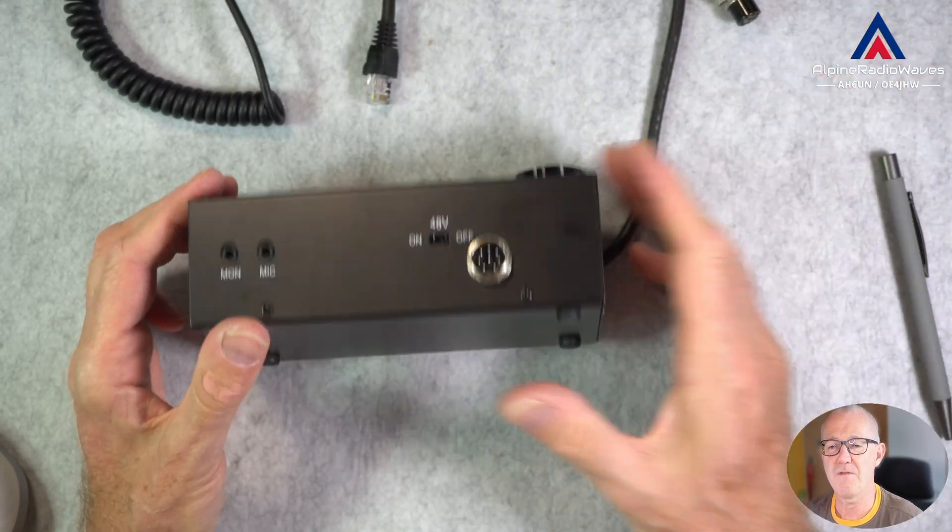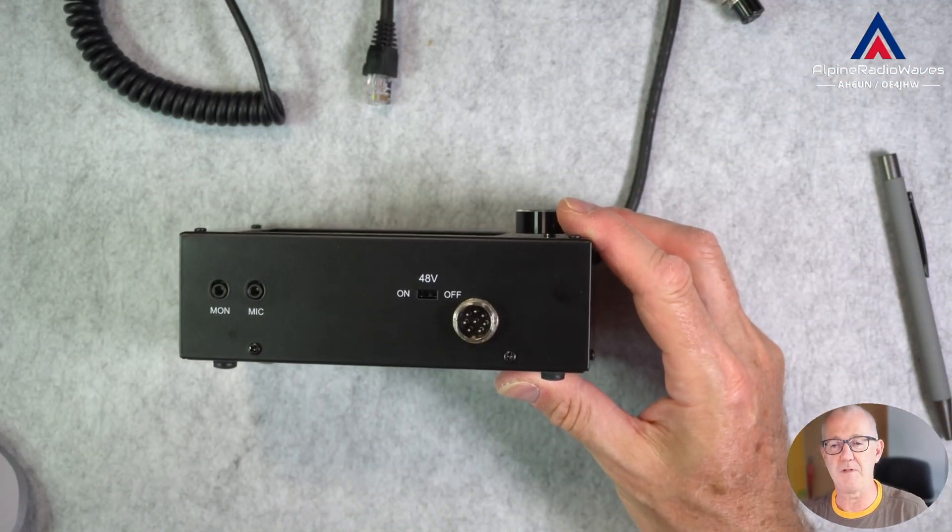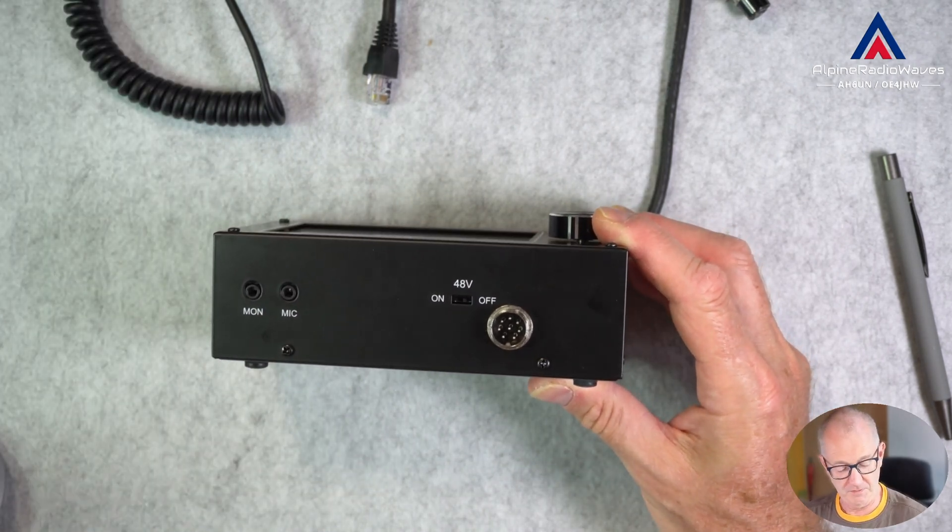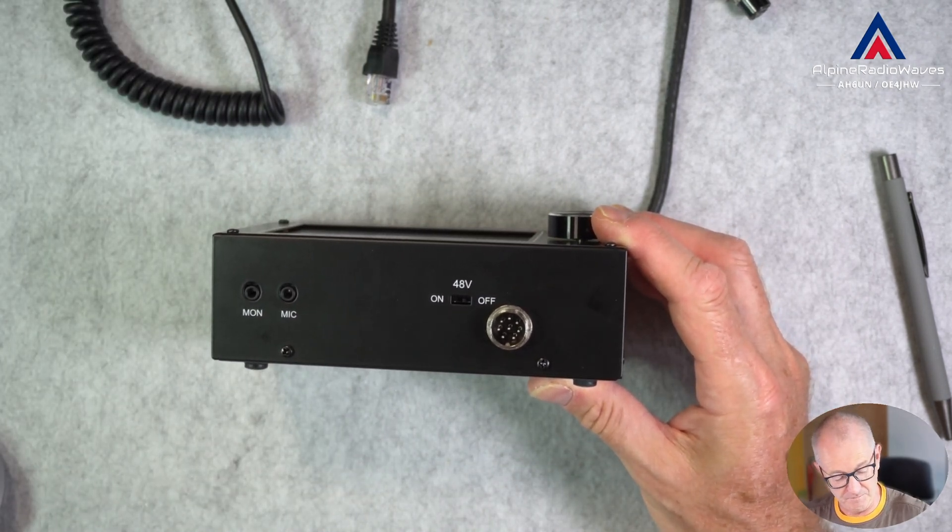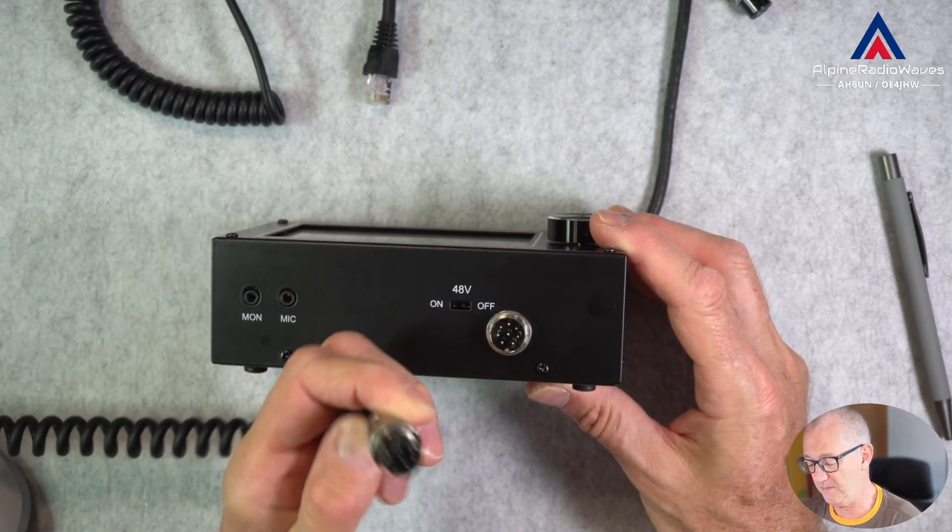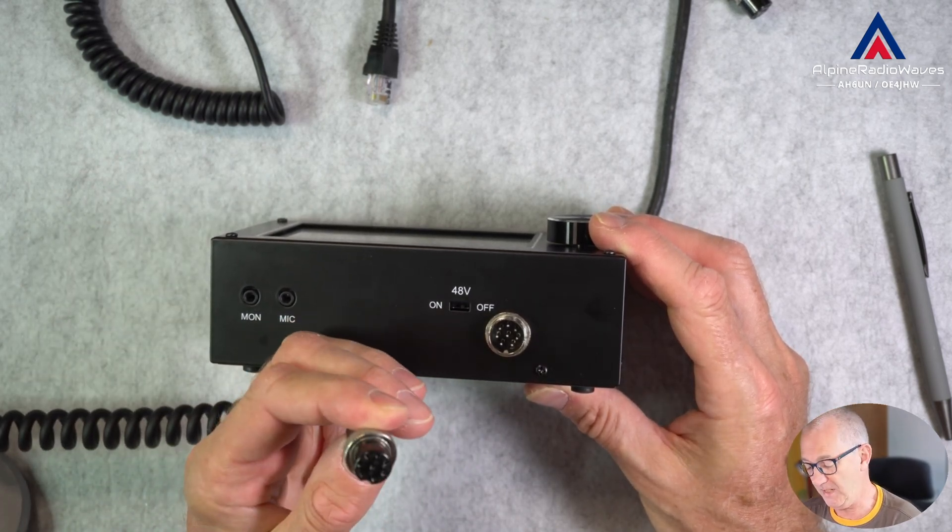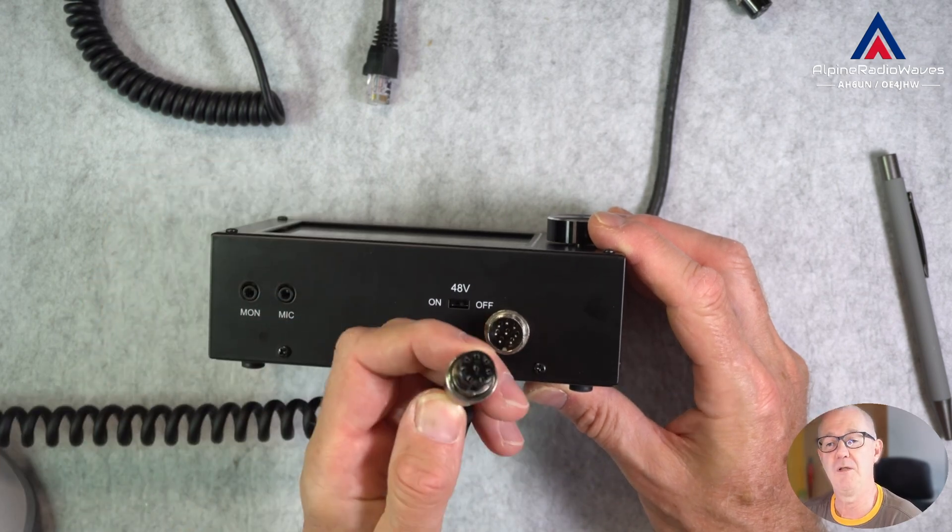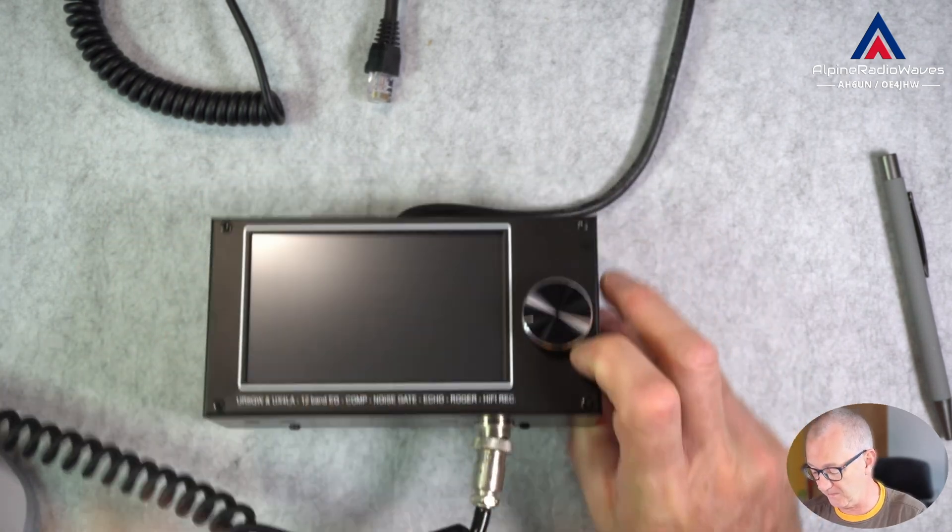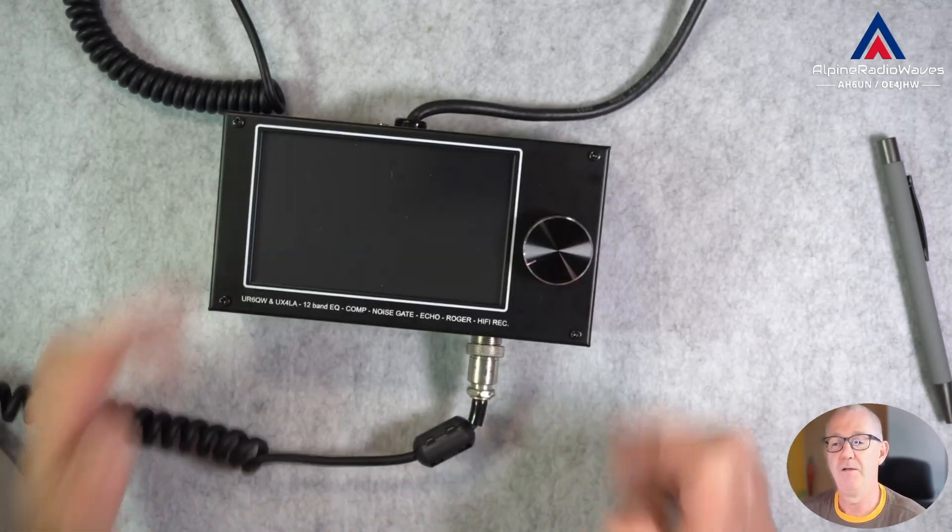On the other hand, if you have a desktop microphone like this MD200, which has, for example, a round pin, it's a round connector, 8-pin round connector, you can plug this into your equalizer like so.